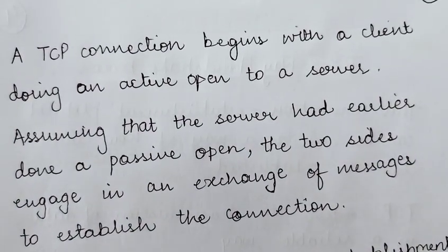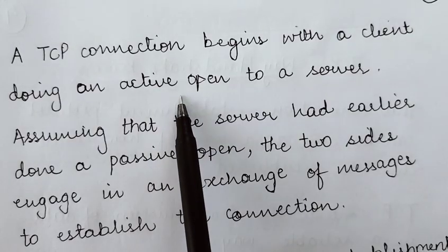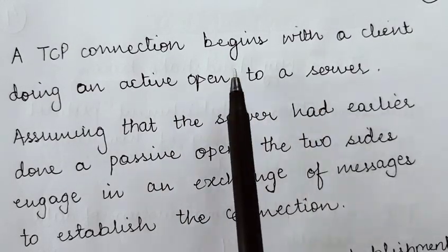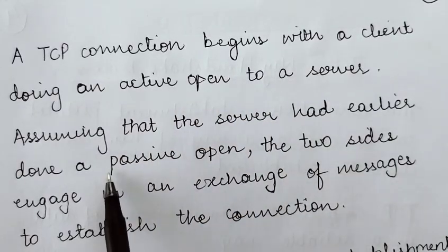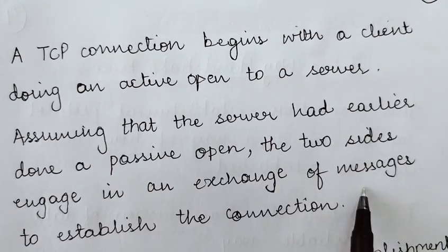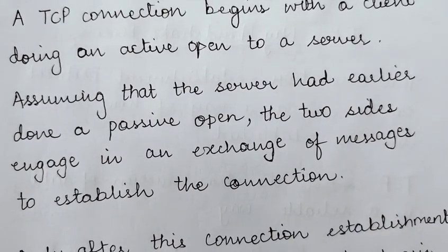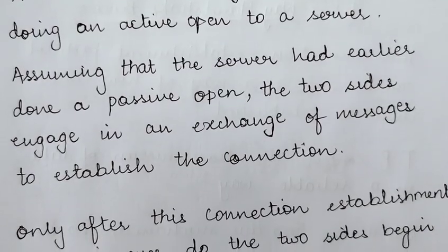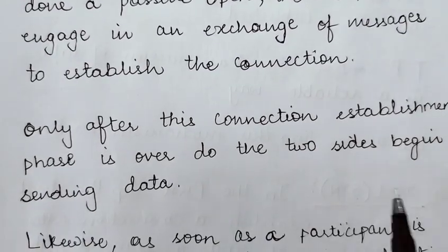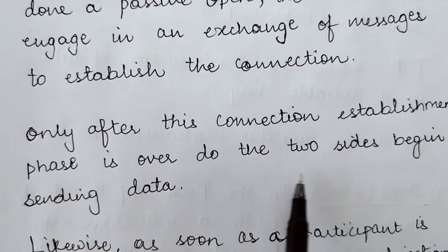A TCP connection begins with the client doing an active open to the server. In a client-server scenario, it is the client which sends a request for opening a connection with the server. Assuming the server had earlier done a passive open, the two sides engage in an exchange of messages to establish the connection. Only after this connection establishment phase is over do the two sides begin sending data.